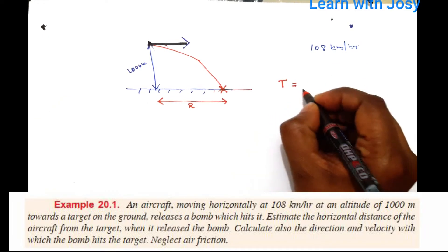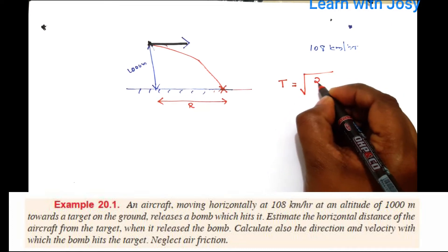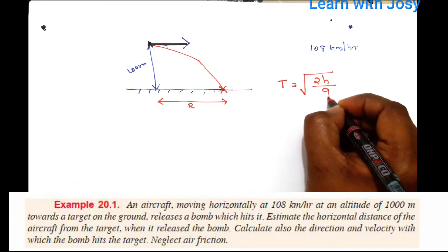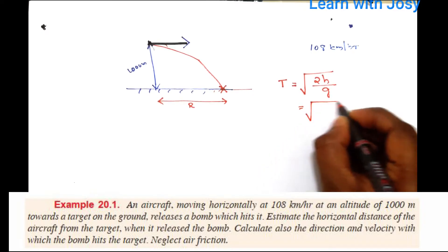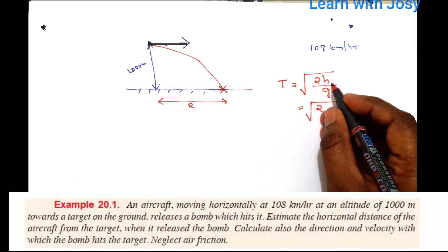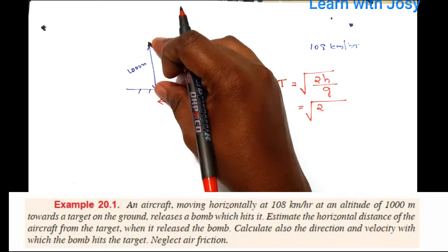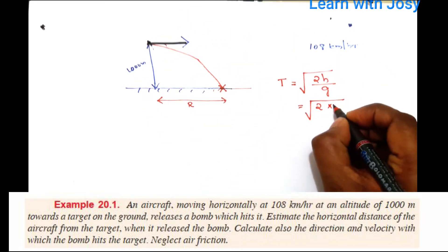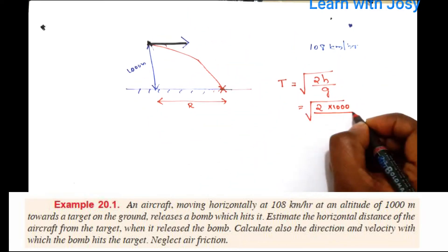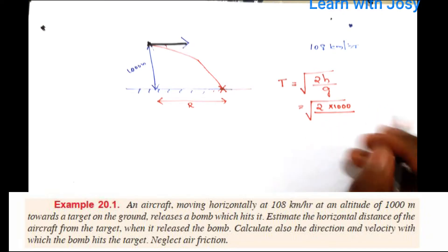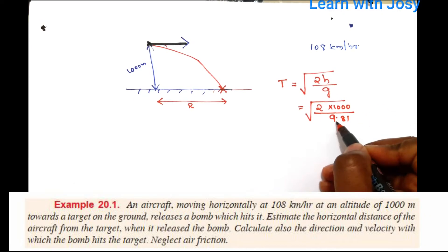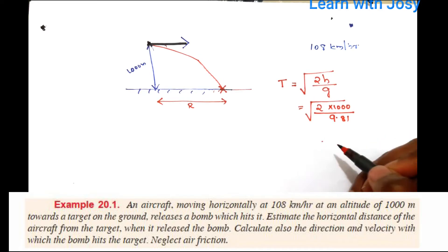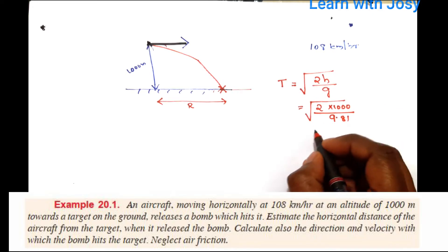The time of flight is t = √(2h/g). The height h is 1000 meters and g is 9.8 m/s². We substitute these values.